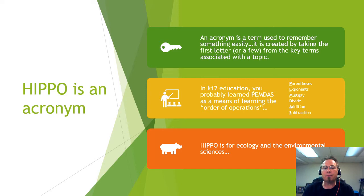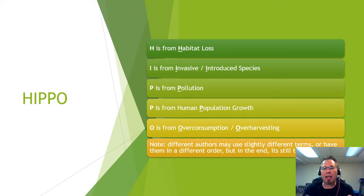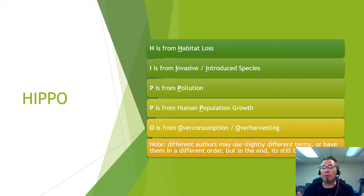The H stands for habitat loss. The I is for invasive or introduced species. P is for pollution — obviously you want to get rid of pollution. The other P is for population growth, which is a massive issue when dealing with sustainability. The O is for overconsumption or overharvesting, and that'll be a common theme as we go through the semester.